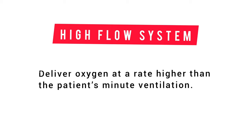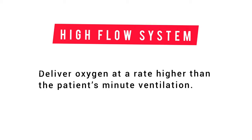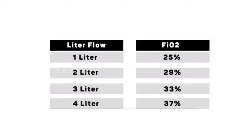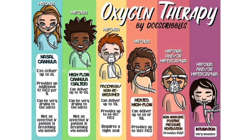High flow systems are going to deliver oxygen at a rate higher than the patient's minute ventilation. You'll also need to understand that oxygen delivery is often talked about in two different ways: liters per minute, and fraction of inspired oxygen — or, more simply, percent oxygen. Now we'll see the oxygen delivering devices one by one.